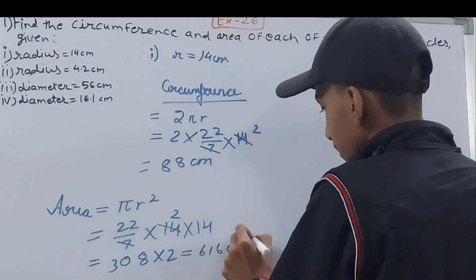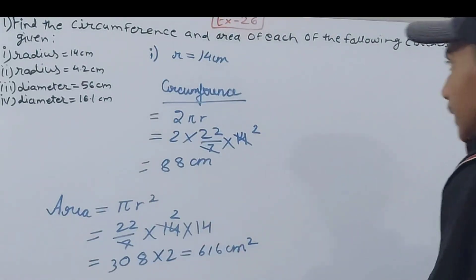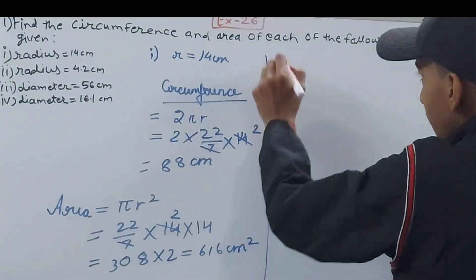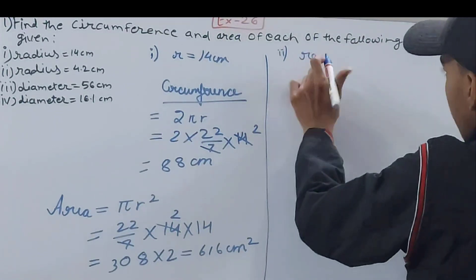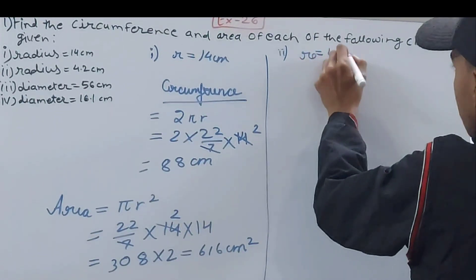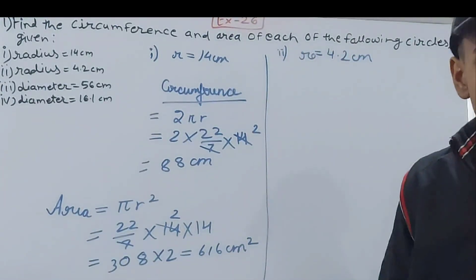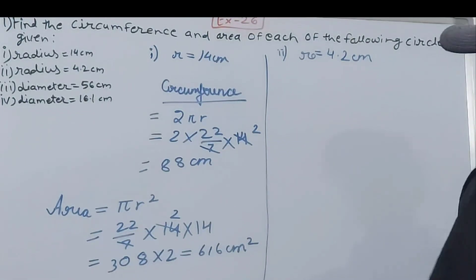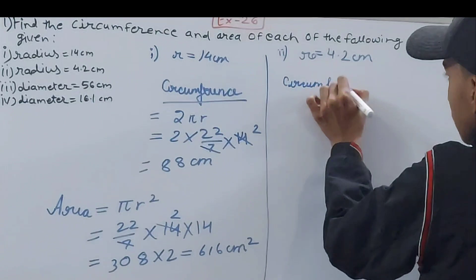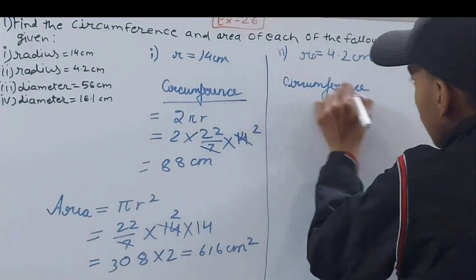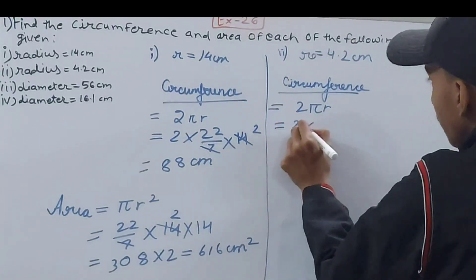This is the area of the circle. Now come to the next part, the second part. We have the radius now as 4.2 centimeters. Same way we will do this, same formula but only the calculation will be different. Circumference is equal to 2πr.